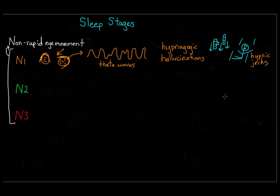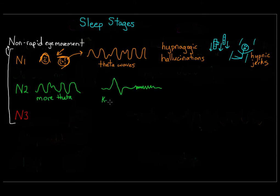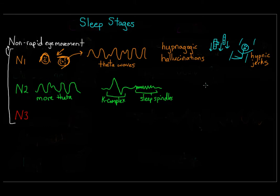N1 is our first, lightest stage of sleep. N2 is a slightly deeper stage — although people in N1 are easy to wake up, people in N2 are harder to awaken. We see more theta waves as well as sleep spindles and K-complexes. Sleep spindles are bursts of rapid, rhythmic brain activity. Some researchers think that sleep spindles help inhibit certain cognitive processes or perceptions so that we maintain a tranquil state during sleep. For example, sleep spindles are associated with people's ability to sleep through loud noises.